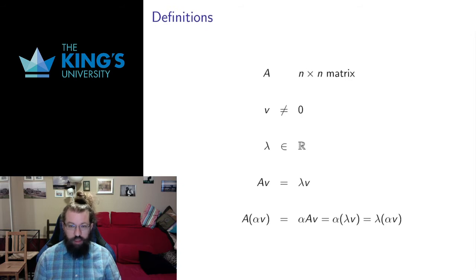So say I have an n by n matrix, a square matrix that's necessary, and I have a non-zero vector here, and I have some real number. The real number could be zero, the vector has to be non-zero.